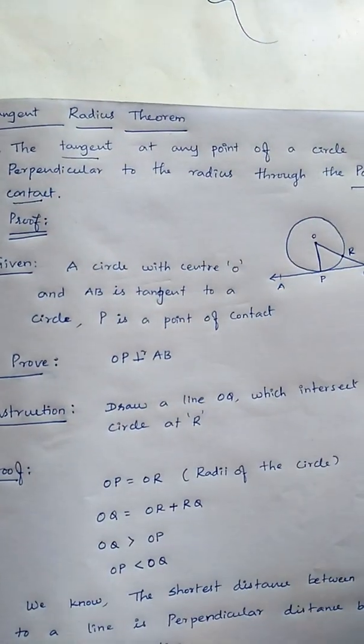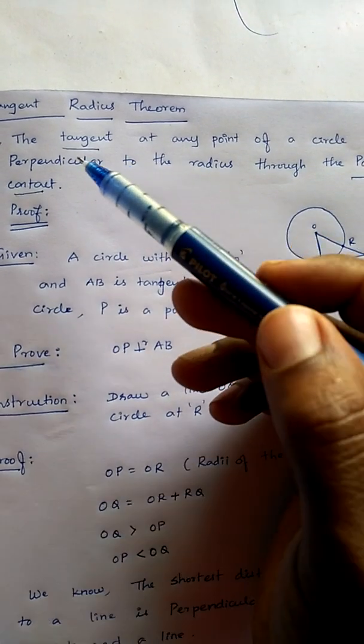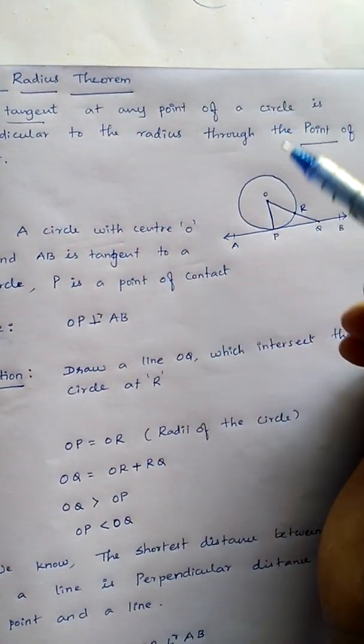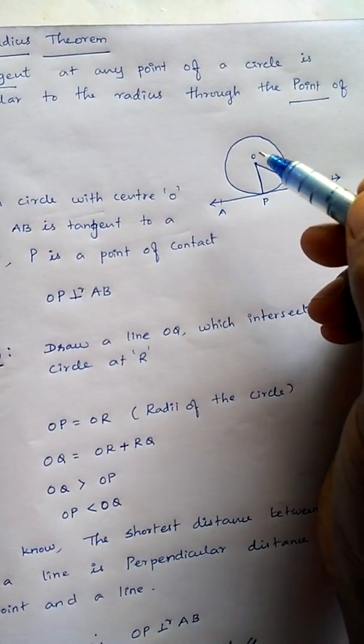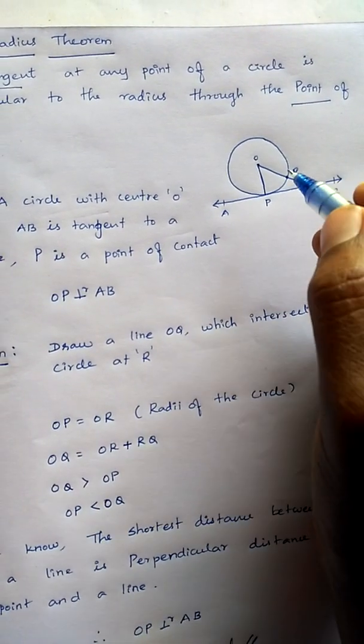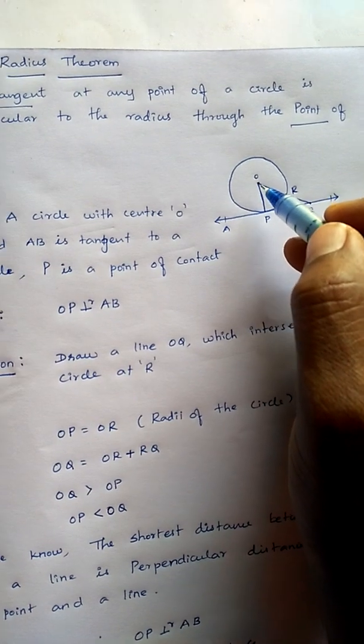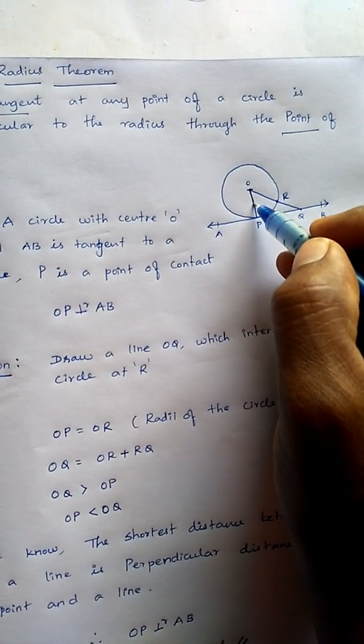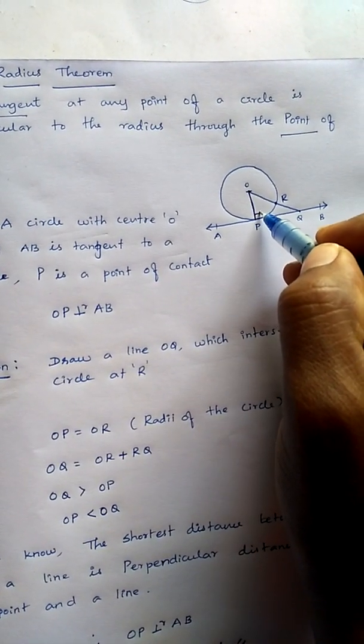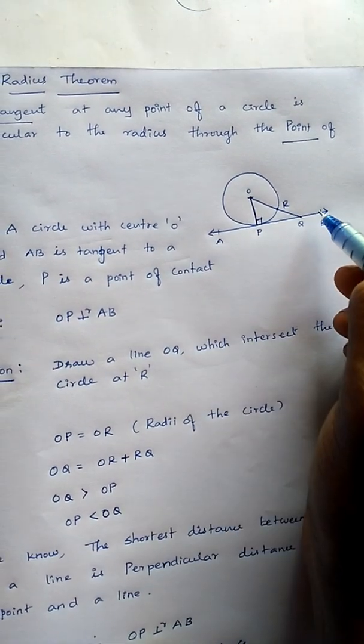Yesterday we discussed what is meant by tangent and what is meant by point of contact in the introduction part. So let's take the tangent at any point of a circle. Let's draw one circle with tangent. So AB is the tangent and we have to prove that the radius from O to P is perpendicular to the tangent.